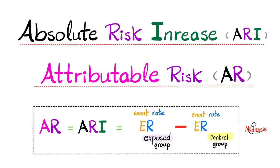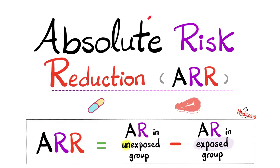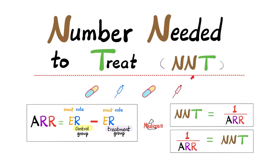Today it's time to focus on the absolute risk increase, otherwise known as the attributable risk, with many practice problems and solutions. Please watch these videos in order to improve the probability of understanding. Please watch the previous videos named absolute risk reduction and number needed to treat before you watch this video.